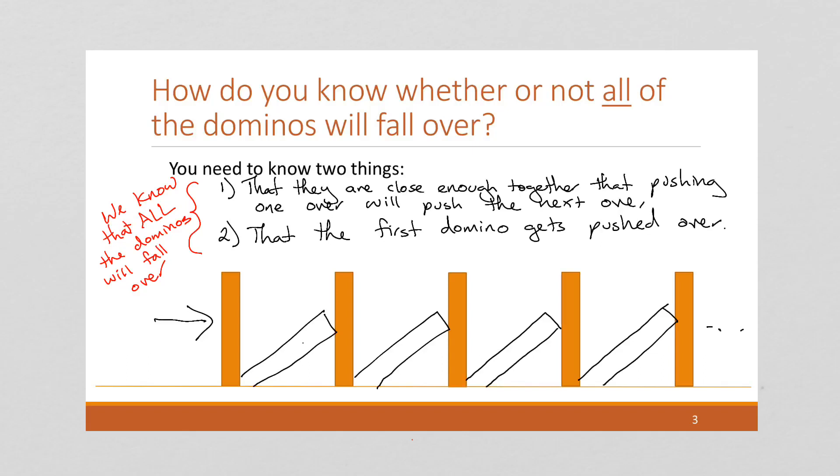And of course, here we're talking about mathematical dominoes, not the physical kind. Because in a physical sense, you can never have a million or infinite number of dominoes, and there are physical characteristics if you don't set them exactly the same distance apart, and so on.